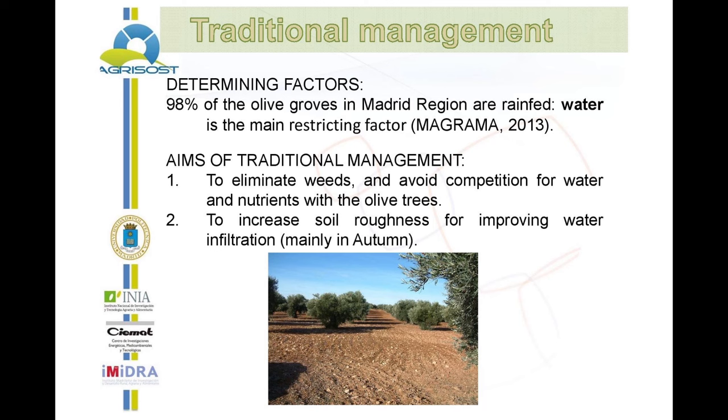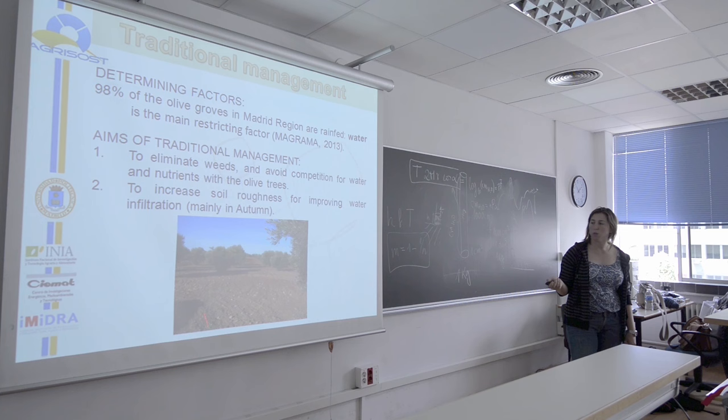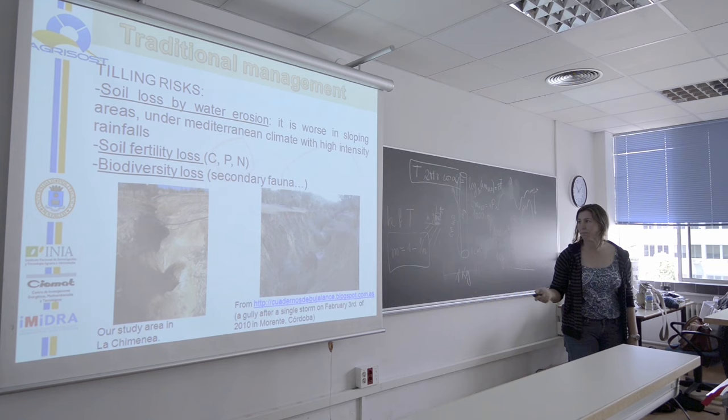With the tillage in autumn, they want to improve the infiltration, but with the first rainfall, a physical soil crust is formed. So the infiltration doesn't work.